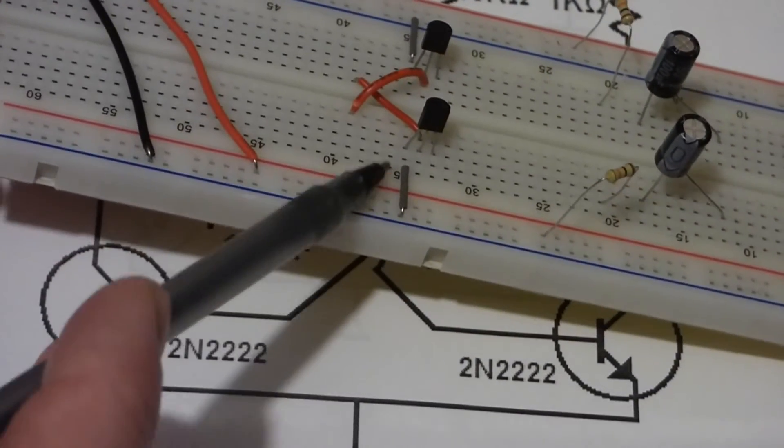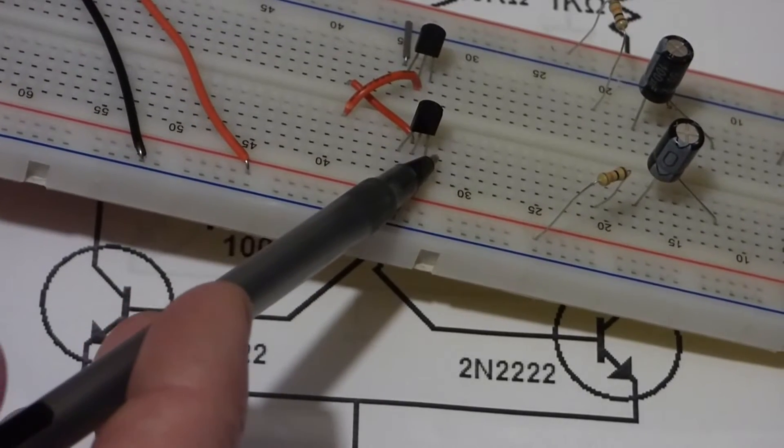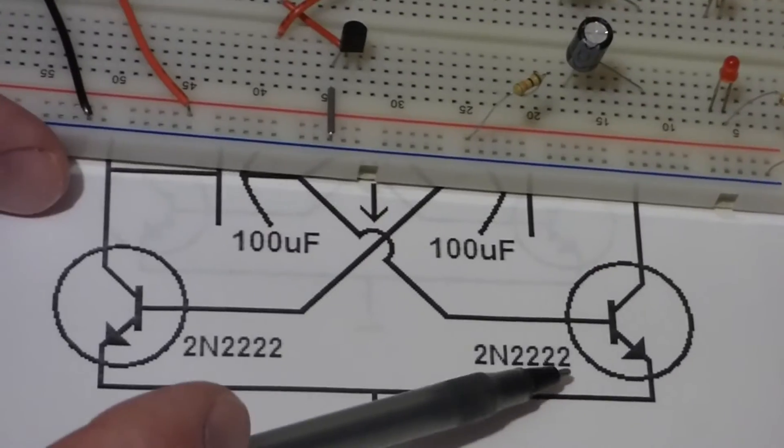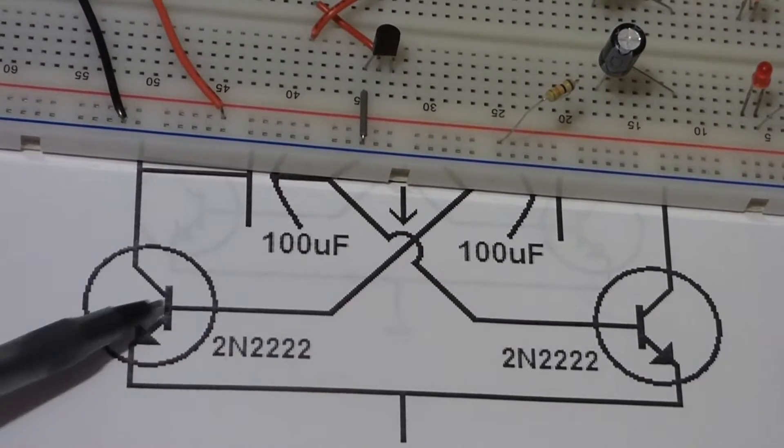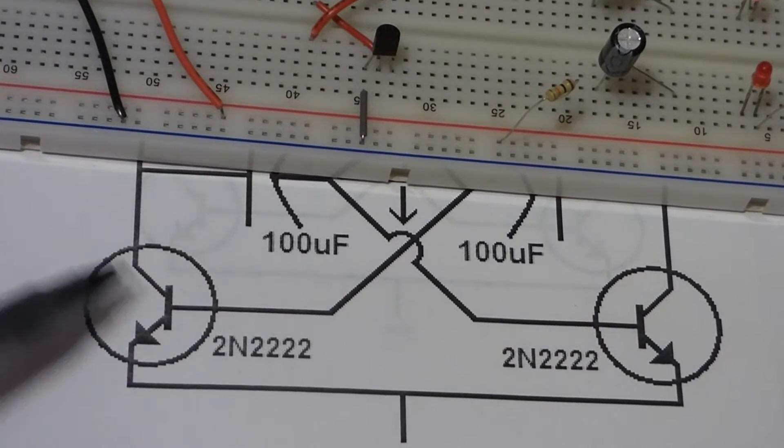And when you look at the flat side, the one on the left is the emitter. The middle lead is the base. And the top lead is the collector. So when you look at the schematic, this is the emitter where the arrow is. The base is in the middle. And the collector is up here.